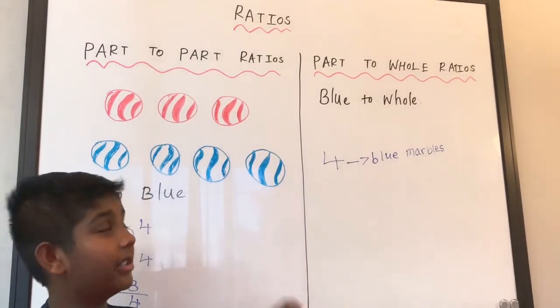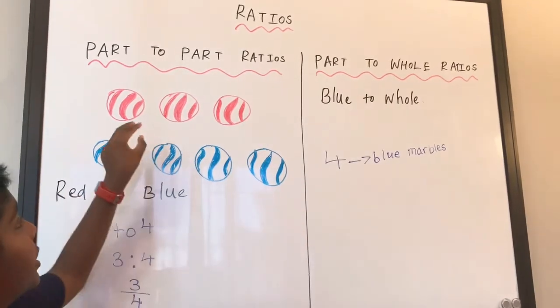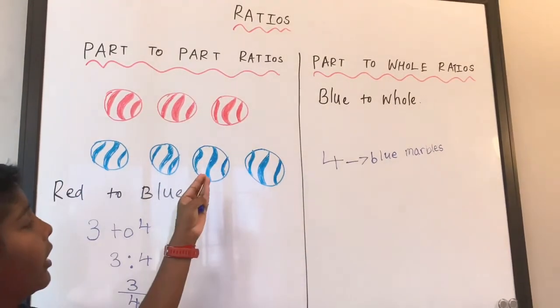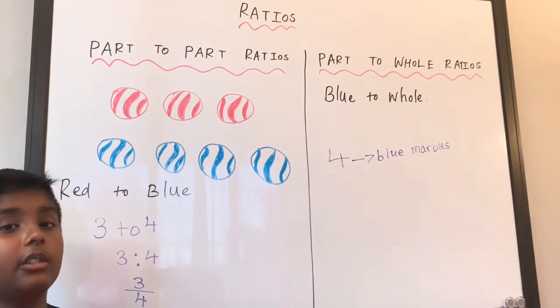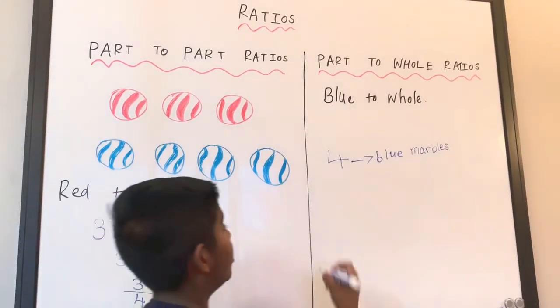How many marbles are there in total? There are three red marbles and four blue marbles. So if we add it up, we have seven marbles in total. So I'm going to put seven.